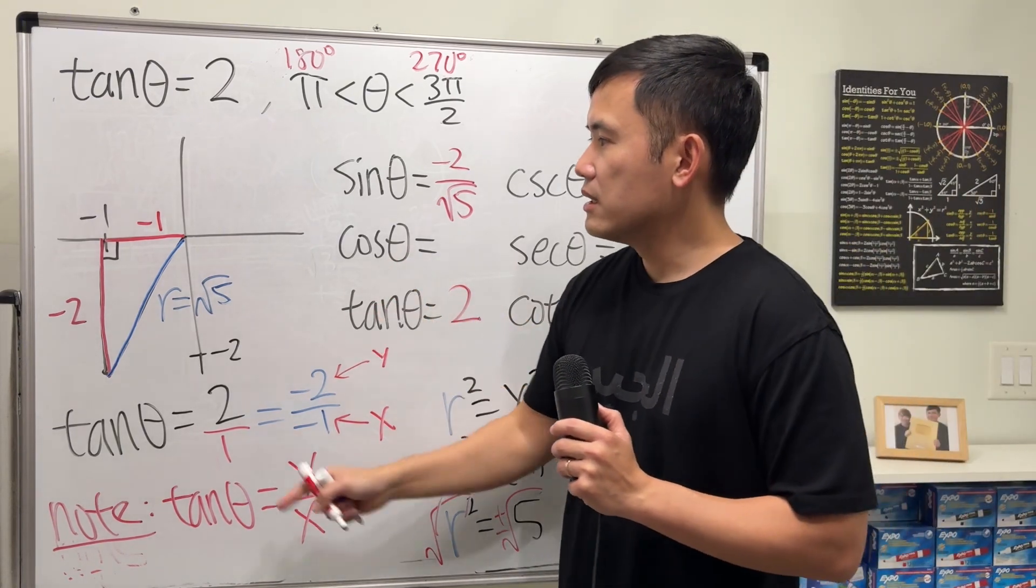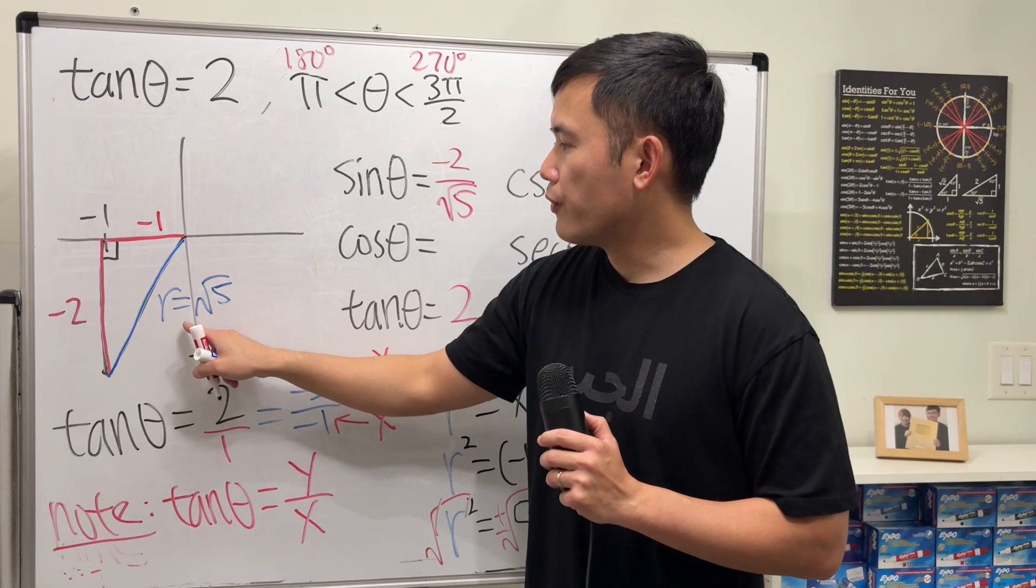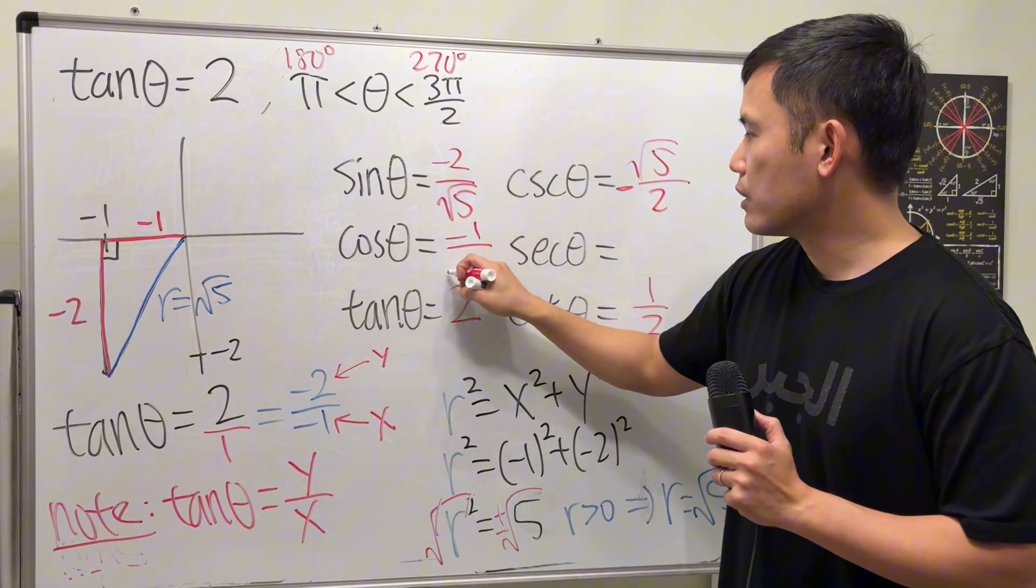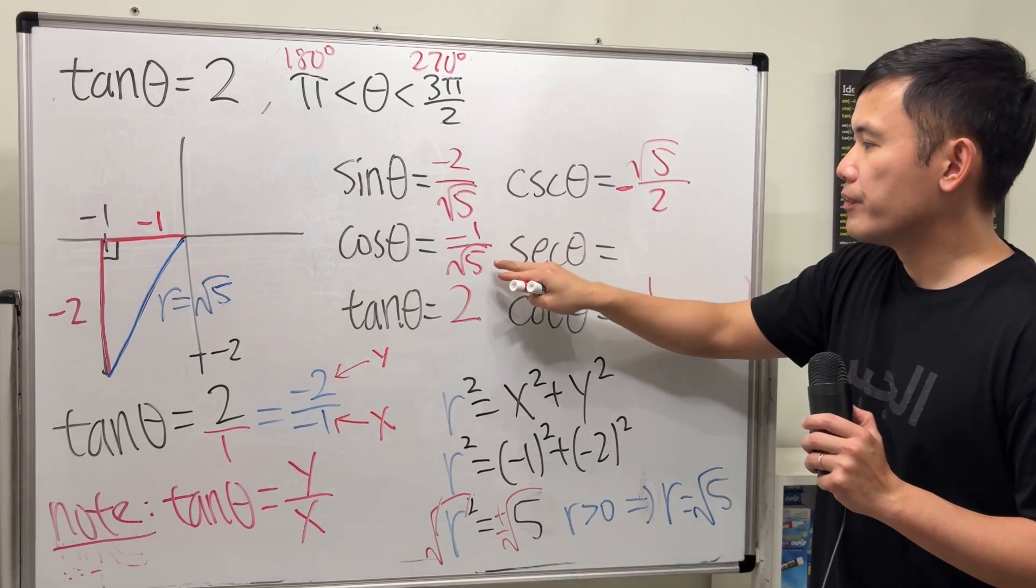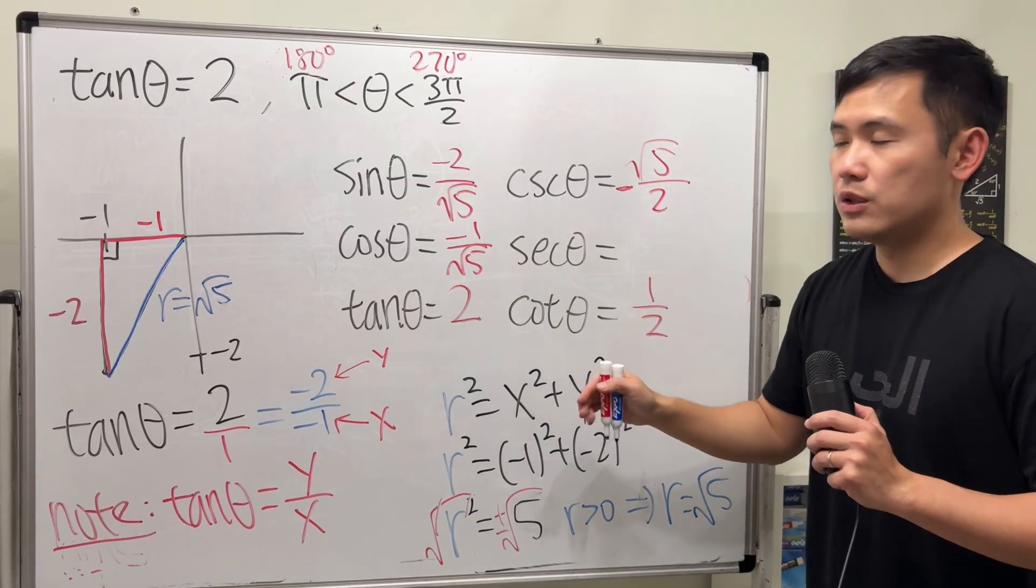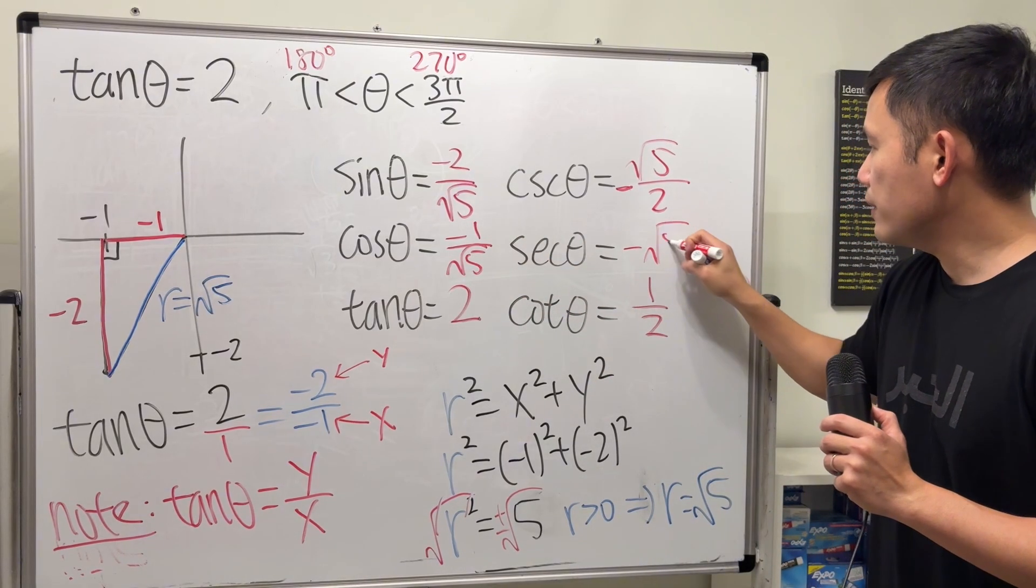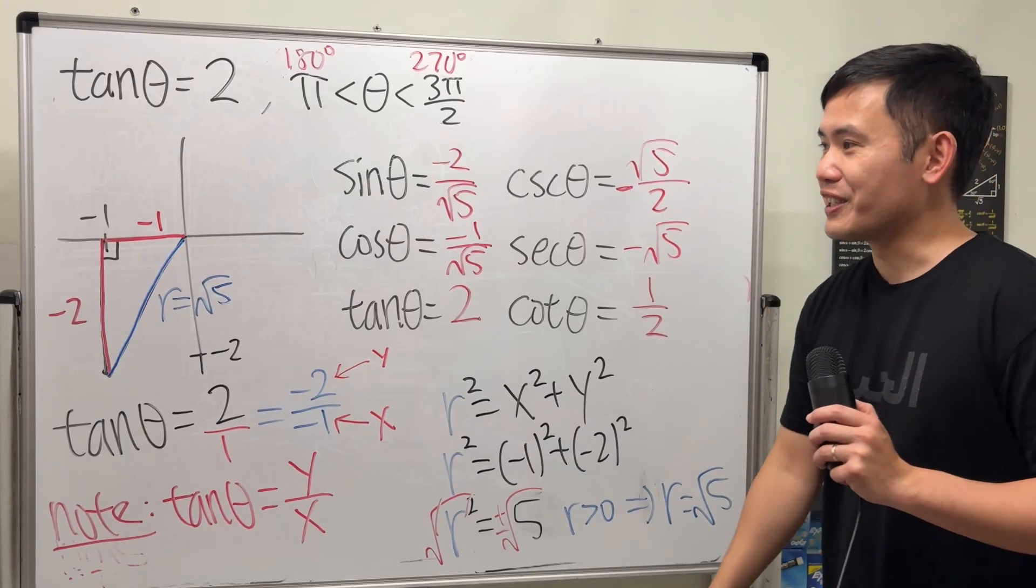For cosine, it's adjacent over hypotenuse, which is negative 1 over square root of 5. And then for secant, it's just the reciprocal. Square root of 5 over negative 1 is just negative square root of 5. And then we are done, just like that.